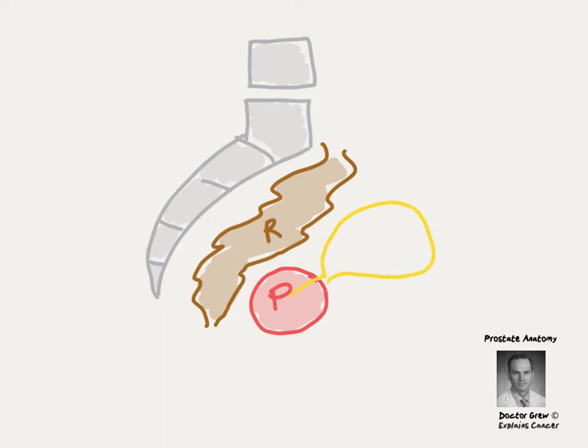Sitting right on top of the prostate is the bladder which fills with urine and then drains it through a tube called the urethra which dives right through the prostate.